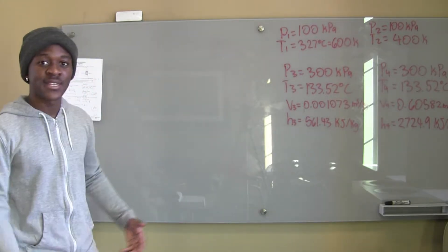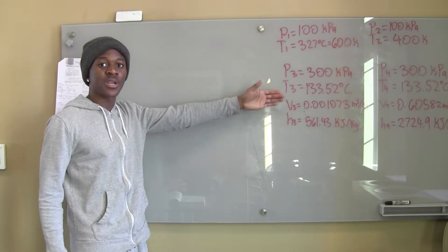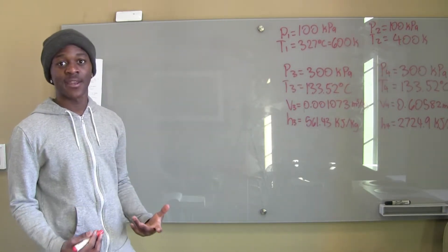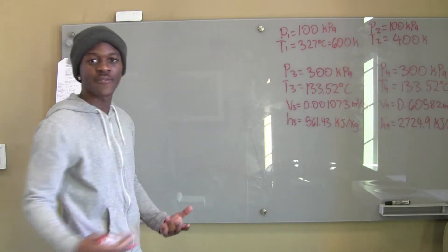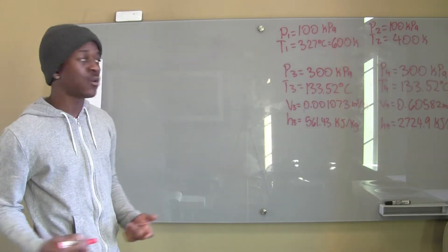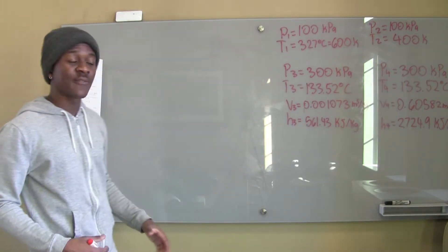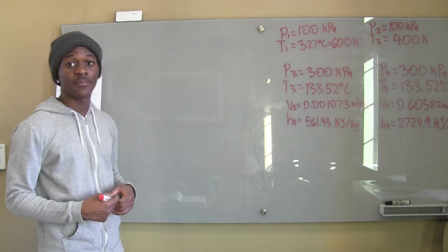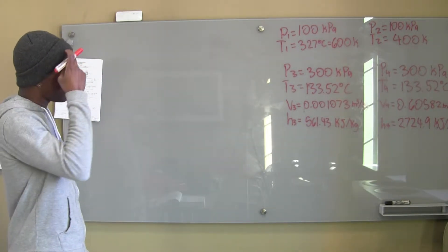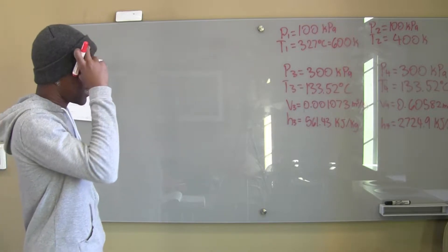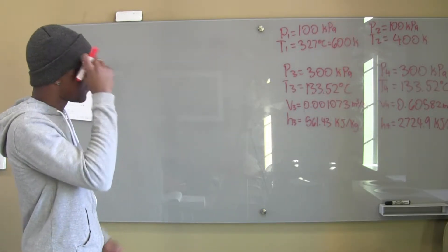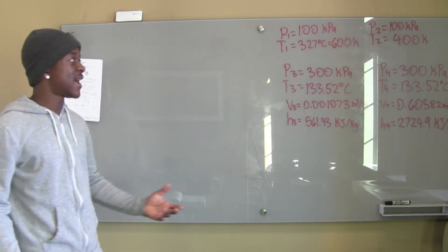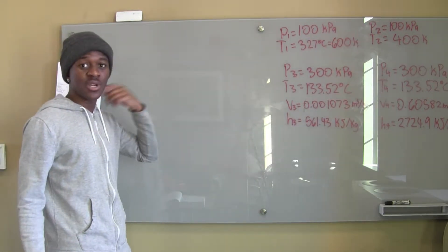I went ahead and found all of my properties. I used state 1 to refer to the air at the inlet, state 2 to refer to the air at the outlet, state 3 to refer to the water at the inlet, and state 4 to refer to the water at the outlet. For the air, I converted the temperatures into Kelvin. We didn't have to do anything to the pressures.